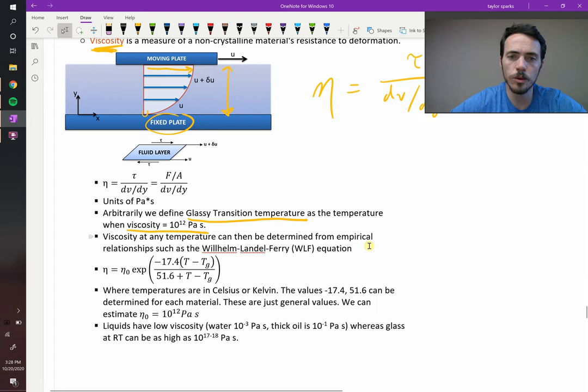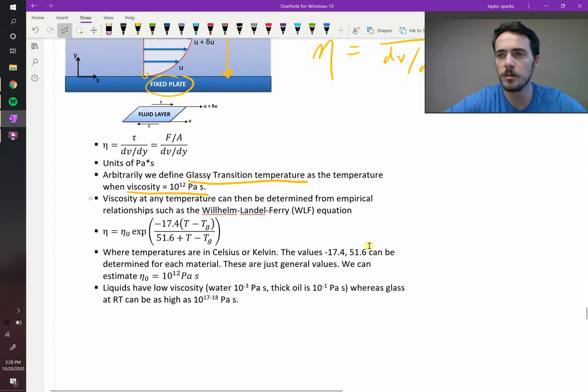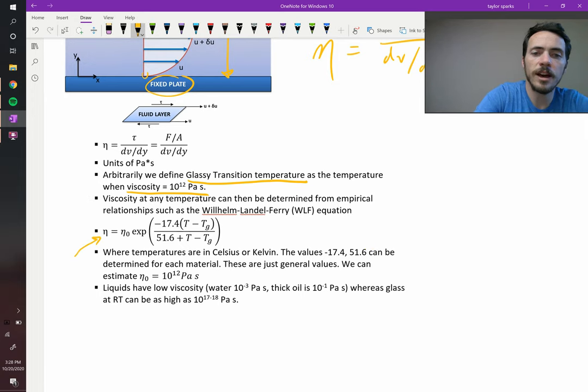There's a useful tool called the Wilhelm Landell-Ferry equation. It works for some systems better than others, but it can essentially tell you what the viscosity ought to be as a function of temperature. So you need to plug in delta Ts in Celsius or Kelvin. Otherwise, your temperature should be in Kelvin.